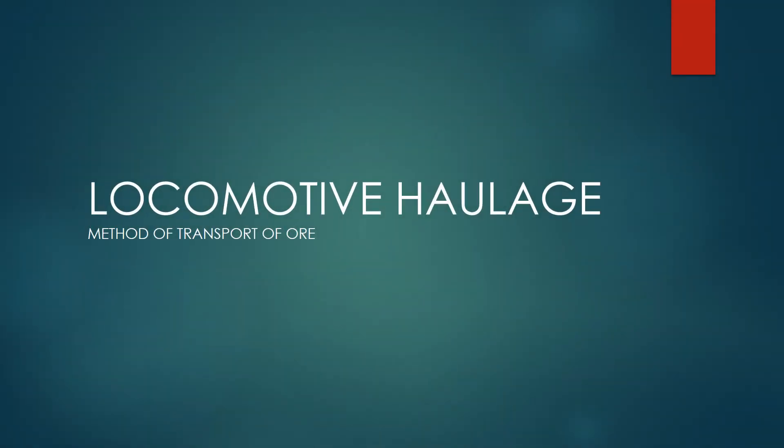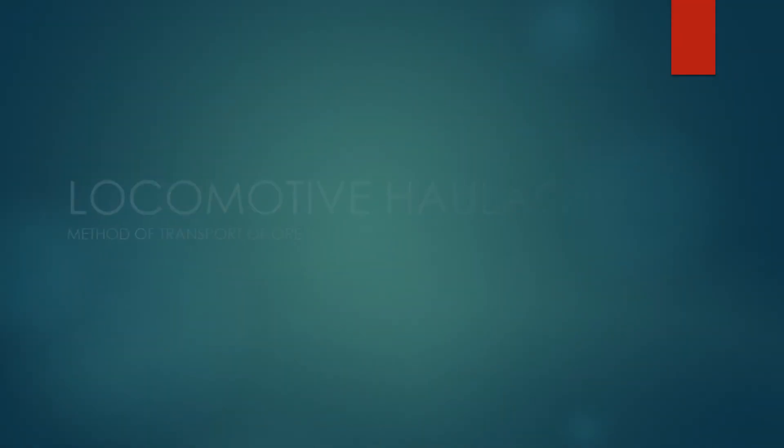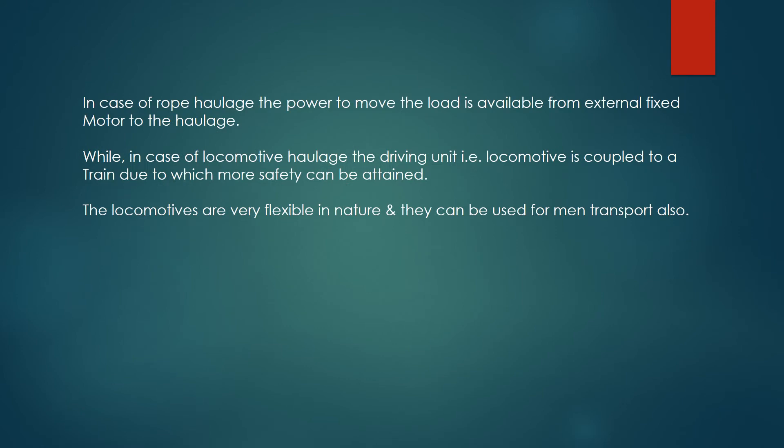Locomotive haulage is a method of transport of ore. In case of rope haulage, the power to move the load is available from an external fixed motor to the haulage.